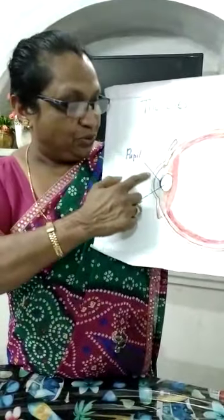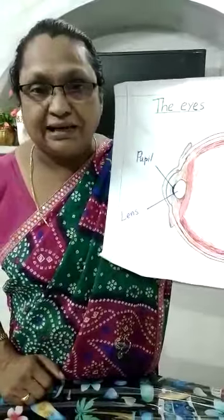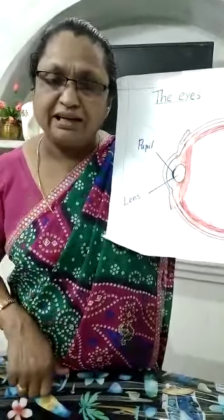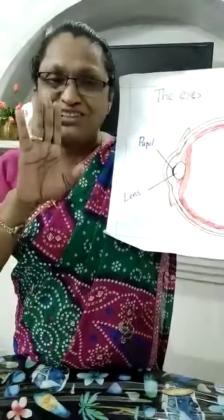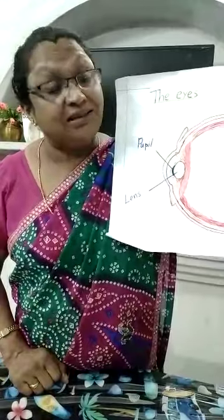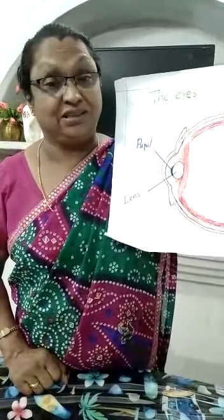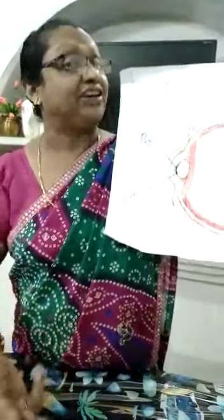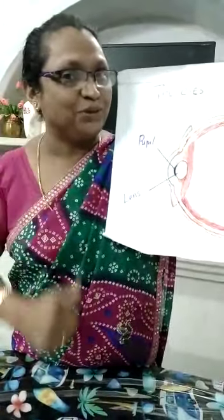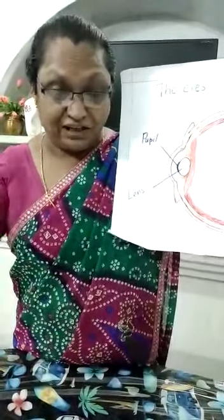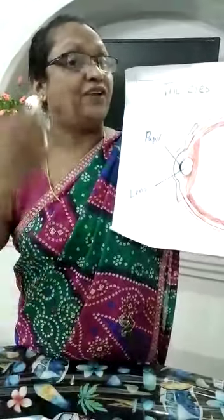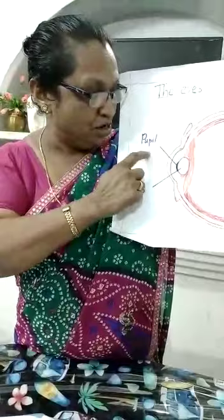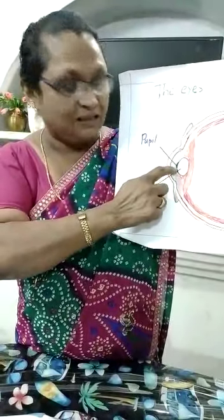Through the pupil, light enters the eye. In the fourth standard, you learned how we see things. We see things when light falls on an object and reflects to our eyes. This reflection enters the eye through the pupil, the dark part at the center of the eye.